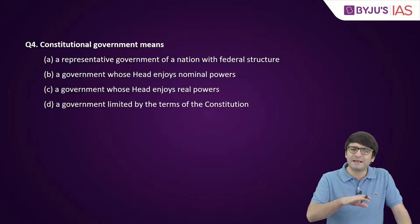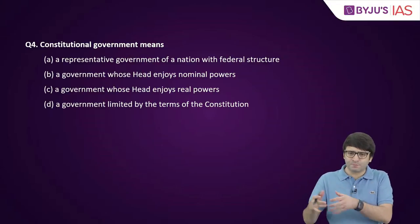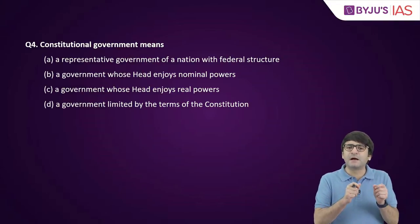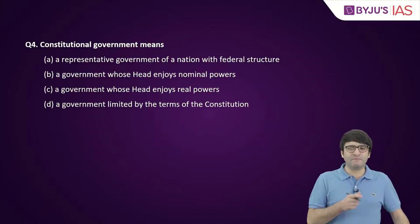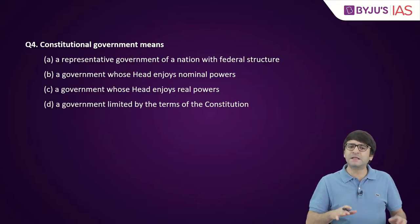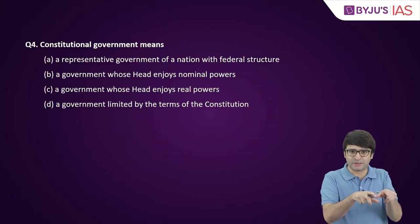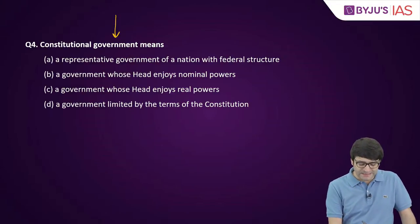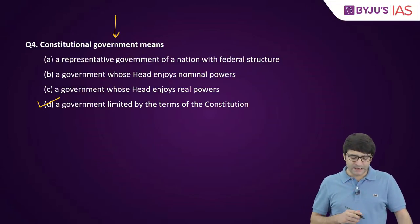Question four, which is basically a repetition of a concept asked in different ways by UPSC: constitutional government involves the doctrine of limited government, meaning the powers of the government are not unlimited — limitations are imposed by the constitution. So a constitutional government is a government limited by the terms of the constitution. D is the right answer.